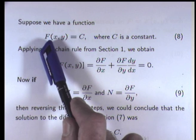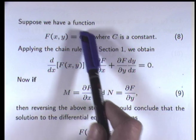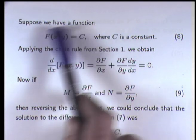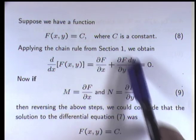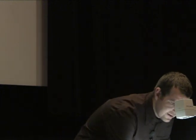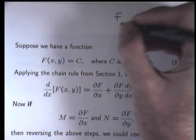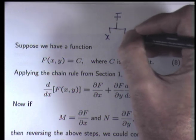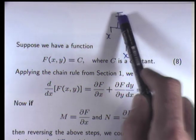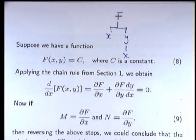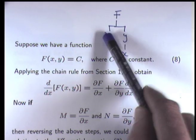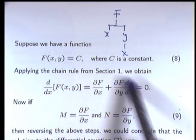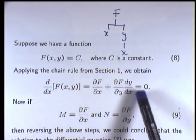Suppose we have a function big F of x, y equals a constant. If we differentiate both sides of this expression with respect to x, then the chain rule gives the following expression. Big F depends on x and y, and y depends on x. So to formulate dF/dx, we go down the branches: dF/dx equals the partial dF/dx plus dF/dy times dy/dx. Of course, if you differentiate a constant you get zero, so this follows.